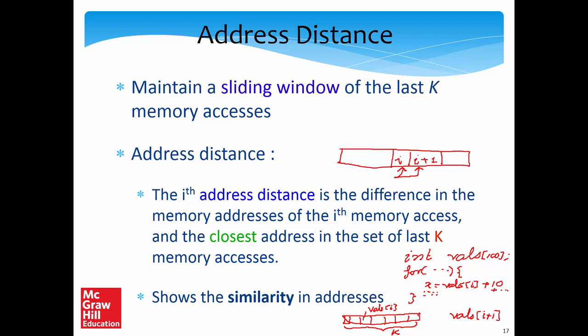We cannot simply compare to the last address accessed because there may be several lines accessing other addresses in between. Instead we consider a window of the last k addresses and find the closest one. When accessing vals[i+1], we find vals[i] as the closest, giving an address distance of 4. Other accesses in between also tend to find nearby data locations. This is spatial locality, a pattern we can use.